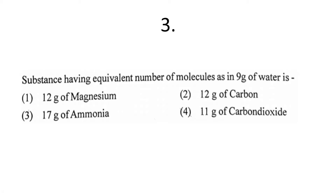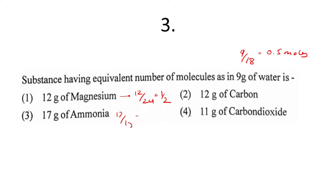9 grams of water means 9/18 = 0.5 moles. Checking options: 12g Mg = 12/24 = 0.5 moles. 17g ammonia = 17/17 = 1 mole. 12g carbon dioxide (CO₂) = 11/44 = 1/4 mole. So the best option is option 1 — 12 grams of magnesium.